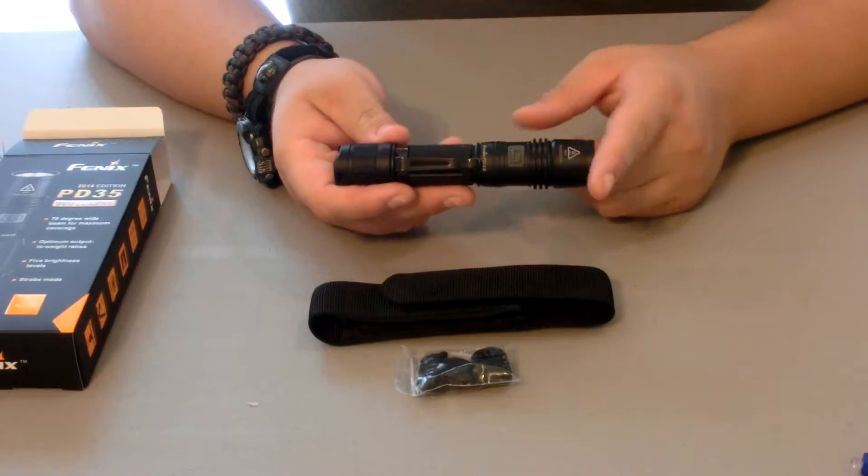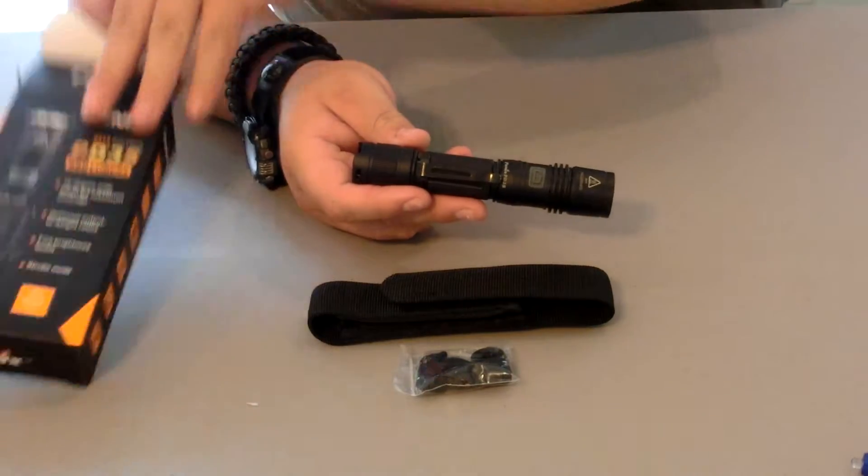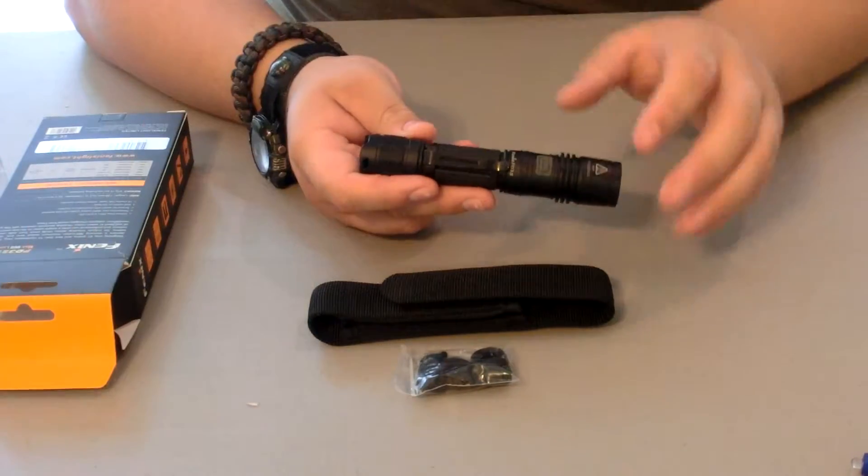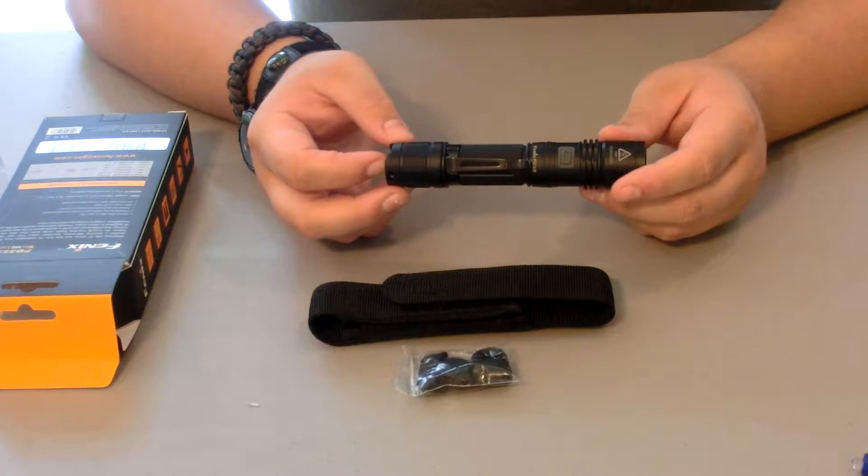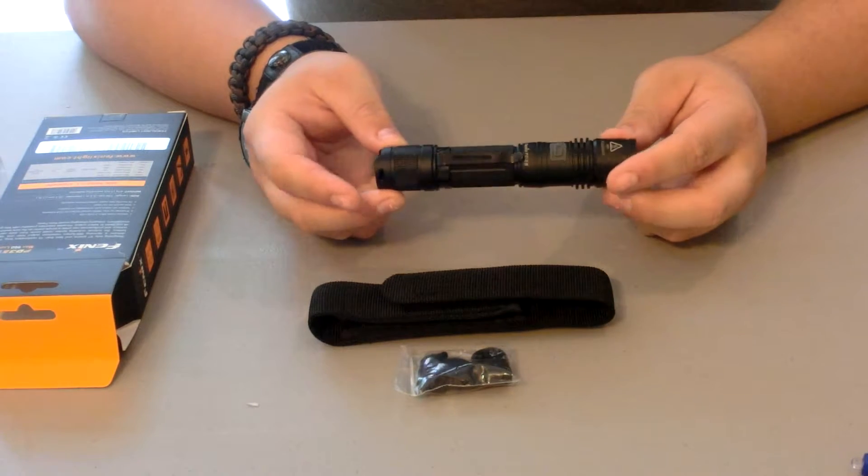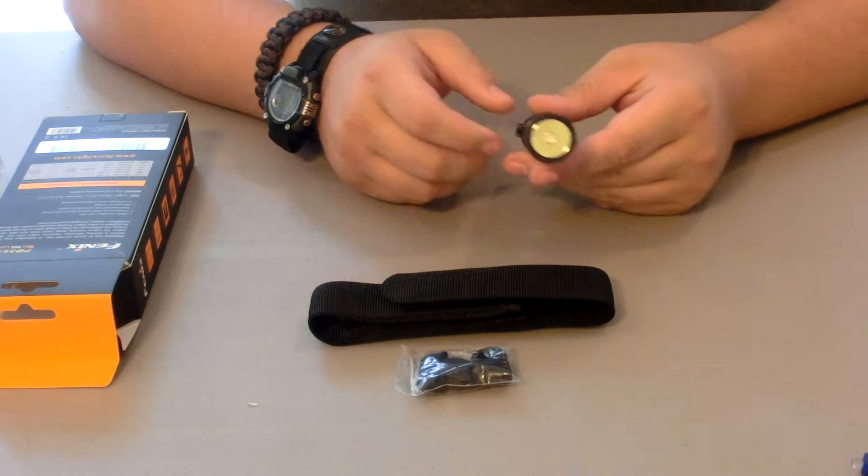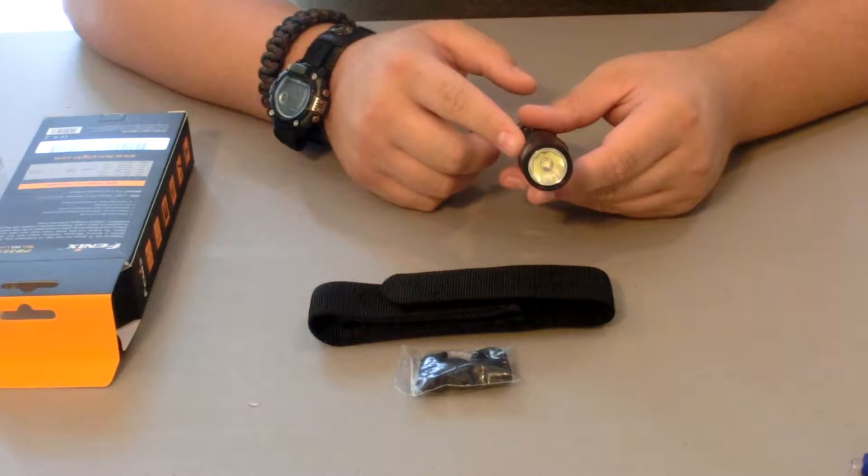Now a little bit of specs about the flashlight. It's 139 millimeters or 5.5 inches long. The diameter is exactly one inch, 25.4 millimeters.